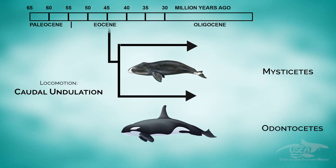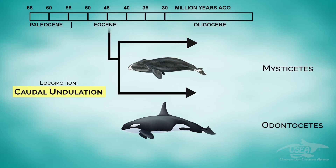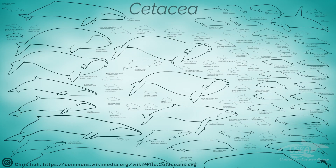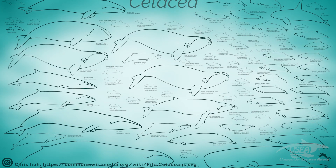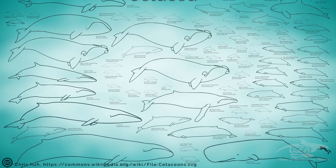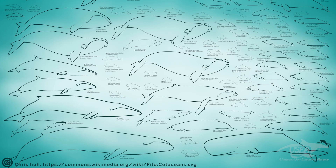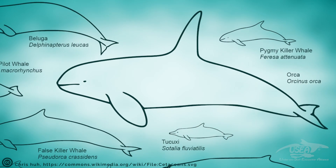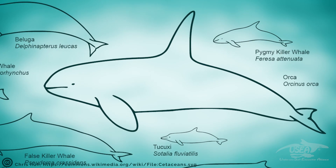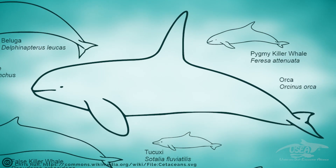They use caudal undulation for moving. Coming from this single ancestor called Mesonyx, we have today more than 60 different species of Cetaceans. The Mysticeti are the Baleen Whales — they filter the water and eat krill, or like the Humpback Whale, also eat herrings. The Odontoceti have teeth, and among the Odontoceti we have Orcas. Evolution is not a static system, and the mutations are very small changes generation after generation — not visible from one generation to the next, but over a long range of time we can see the difference in the body.